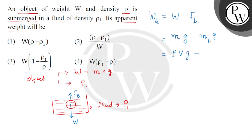Then G minus — mass of the liquid displaced के case में आ जाएगा हमारे पास — the density of the liquid or fluid, which is rho 1, multiplied by VG. So यहाँ से हम check कर सकते हैं, we will be getting common quantity as VG.